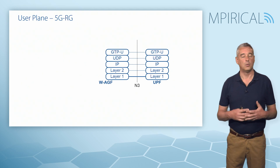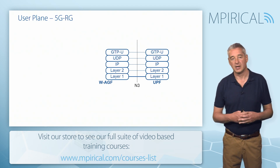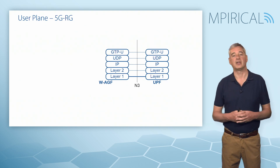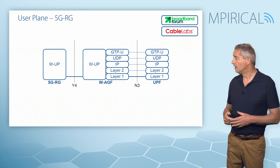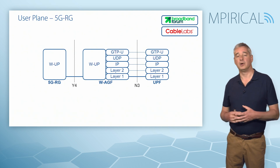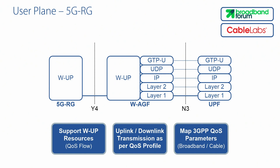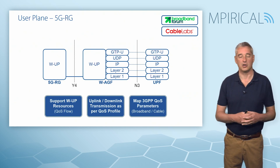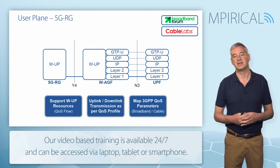Switching to the user plane and returning to the 5G variant: N3 operates between the Wireline Access Gateway Function and the UPF, using standard 3GPP protocols — GTPU sitting on top of UDP, IP, and so on — much the same as N3 between the UPF and gNodeB in standard 5G architectures. Across Y4, the Wireline User Plane Protocol operates, defined by the two organizations. Regardless of physical implementation, this protocol supports the same standard features: support for wireline user plane resources mapping to QoS flows based on PDU sessions, and physically allocating those resources across the 5G wireline network.